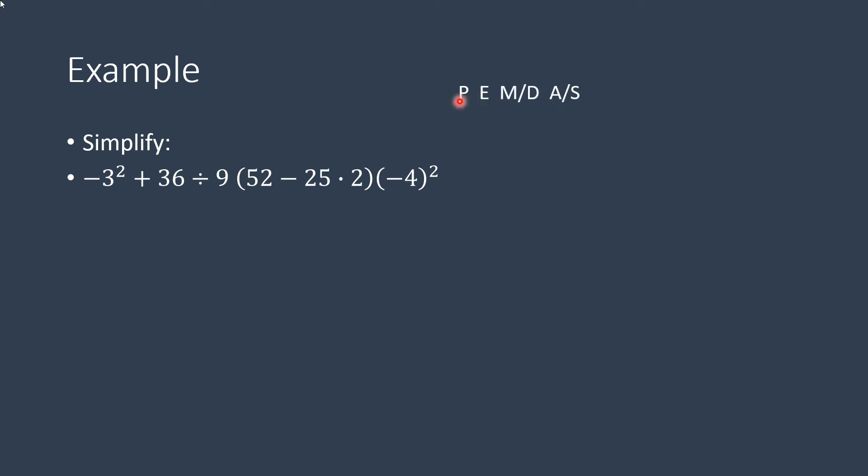All right, that's a reminder of PEMDAS, or order of operations, which we have to do parentheses first, which we would do the 52 minus 25 times 2, and you apply the order of operations inside the parentheses. So we would do multiplication inside those parentheses, 25 times 2 is 50. Then we subtract, 52 minus 50 is 2.